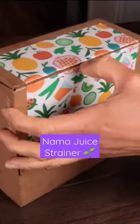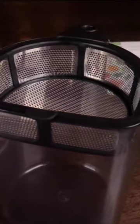So excited to open my strainer that goes with my Nama J2 juicer. You just place it there as you juice and then this pusher goes on top to further push out and extract any juice from the pulp.